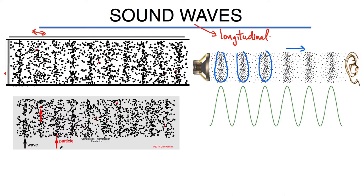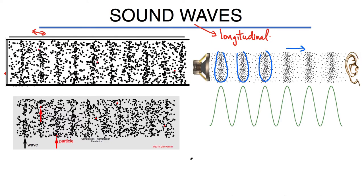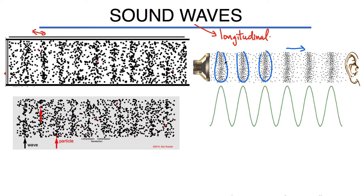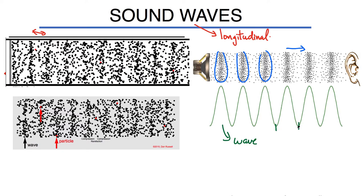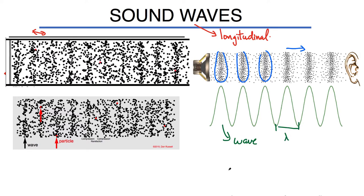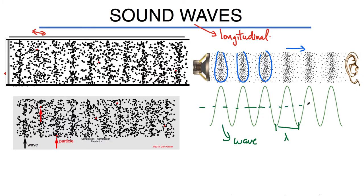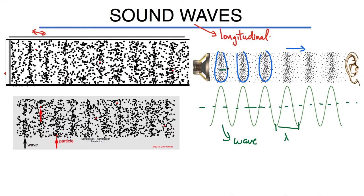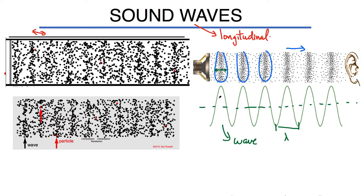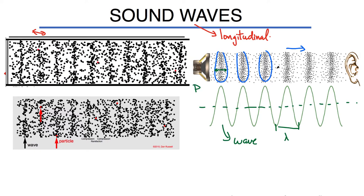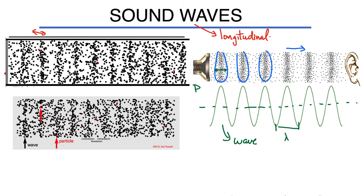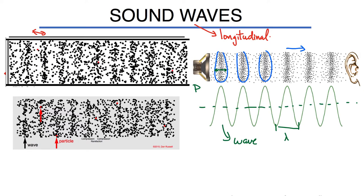If you look at individual particles in the simulation, the red dots highlight their motion — they are simply oscillating back and forth. But you see the whole disturbance propagating down the pipe to the right. Each individual particle is only oscillating back and forth. If I draw the pressure as a function of position, I get a wave with a defined wavelength lambda. The amplitude can be expressed as displacement of the particle or as pressure, and this pressure wave will propagate and eventually reach your ear.